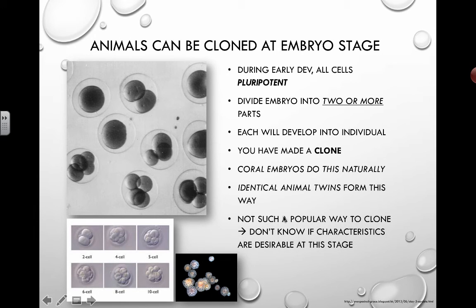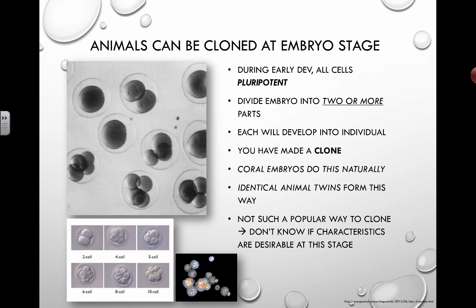Cloning at the embryo stage is not such a popular way to clone, because when you clone yourself you want to know what the traits are like. But if you're cloning something at this early stage, you don't know what it's going to look like — you haven't seen the genes get expressed. You don't know how tall the individual will be, if they have type 1 diabetes, Down syndrome, cystic fibrosis, or the potential to become a future NBA athlete. Everybody looks the same at this point. Obviously, a lot of ethical issues come up, and we don't know if the characteristics are desirable.